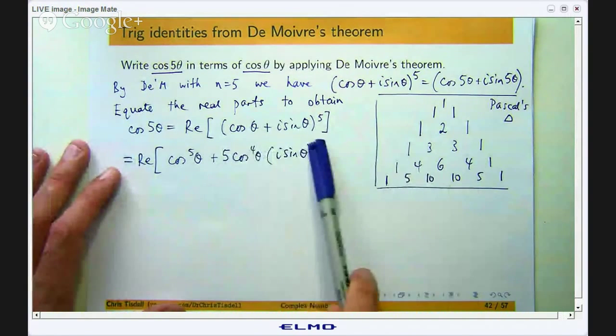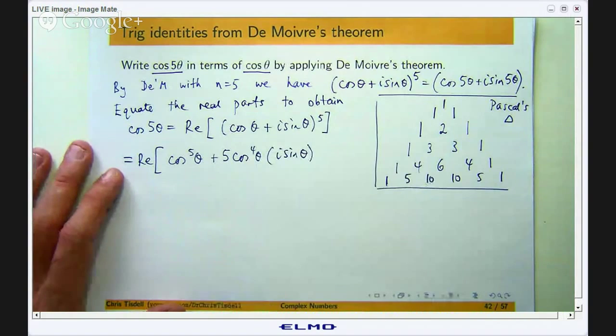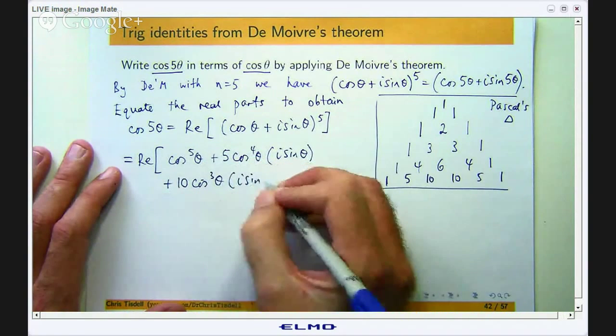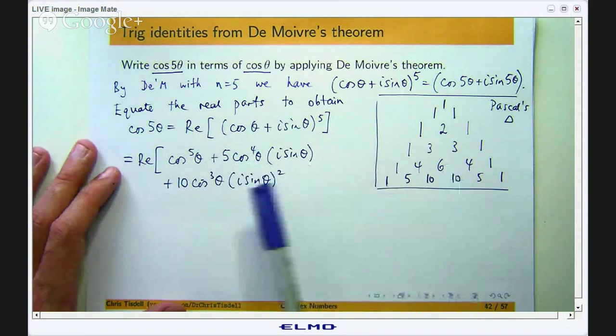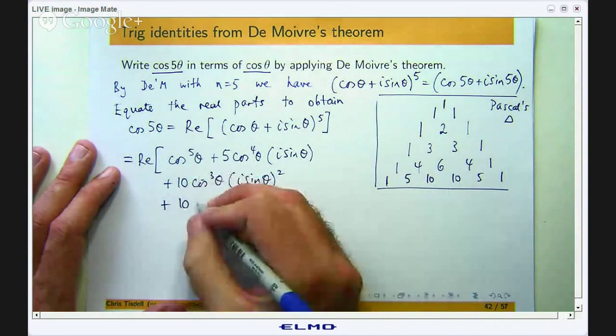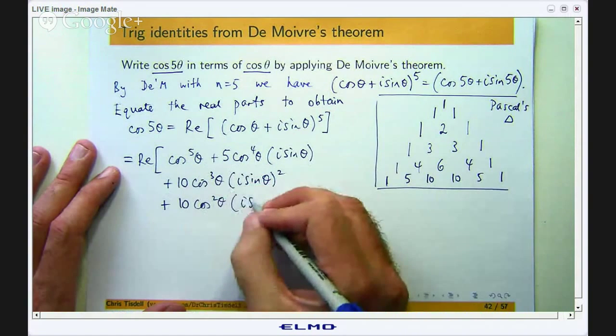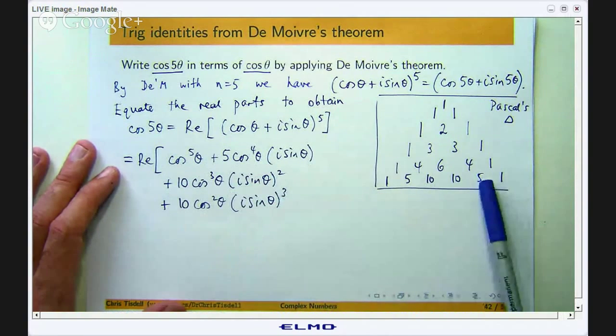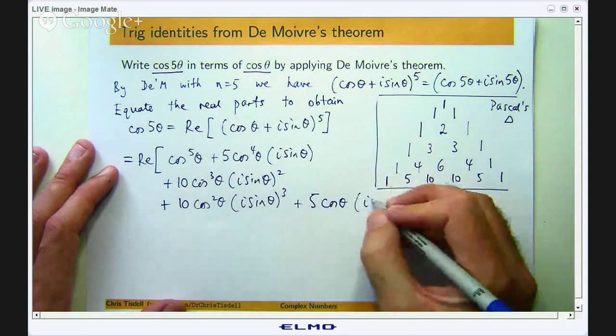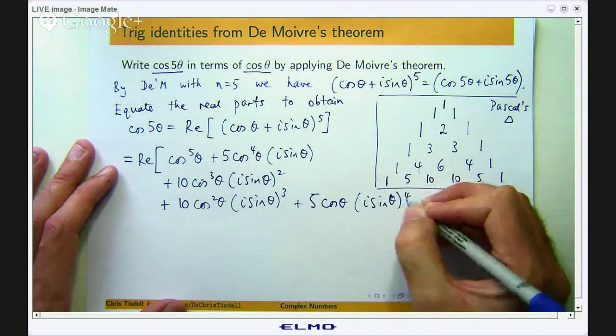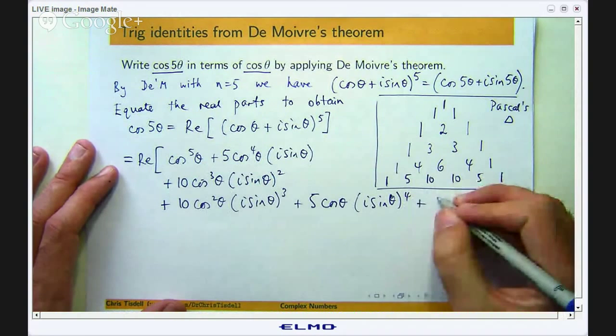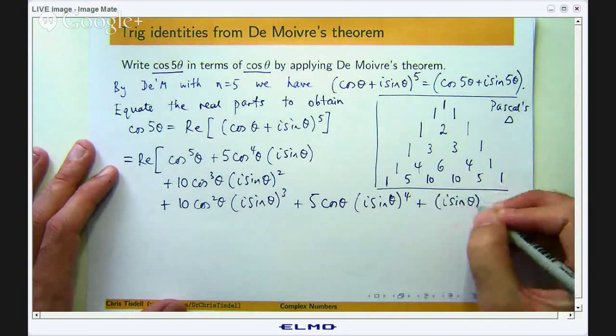Move on to the next one. Decrease this power by 1, increase this power by 1 and the coefficient is going to be 10. Again, move on to the next number. Decrease this power by 1, increase this power by 1 and we will have the same coefficient. And now we have this one. Decrease this power by 1, increase this power by 1. I am sure you can see the pattern now. And the last one, we will decrease this power by 1 and it will become 0, so just 1 and this will become to the power of 5. Phew! That is a long expression here but notice we are only interested in the real part of this expression.